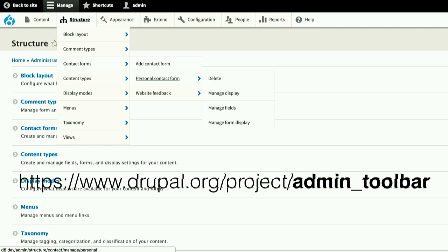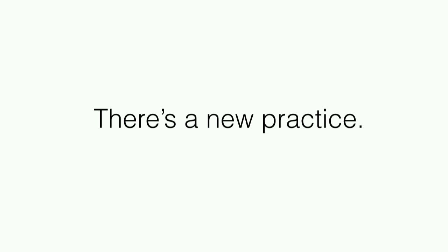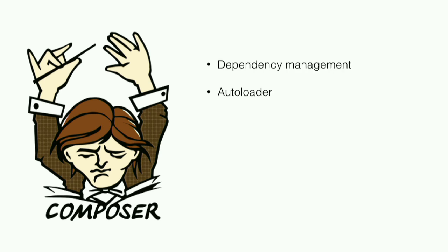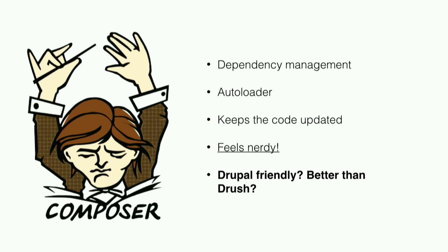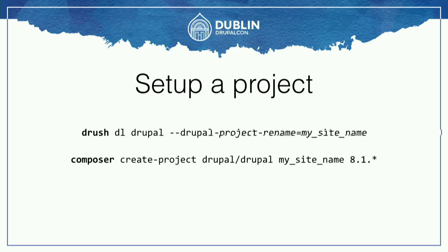Which ends up with all the old practices — they are kind of the same. Now we have a new practice, totally new in Drupal 8: Composer. Composer is the de facto standard for all modern PHP applications today. It handles dependencies, provides you with an autoloader, keeps code updated with composer update, and it feels really good to use. It's a shell thing. But the question is: is it Drupal friendly? Is it ready to be used in a production environment? Let's start with basic stuff — setting up a project. With Drush you would just use drush dl drupal and then install it. With Composer, the syntax is a little bit different but nothing too complicated. Sounds okay for now.